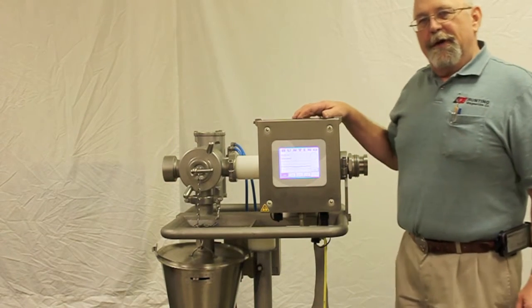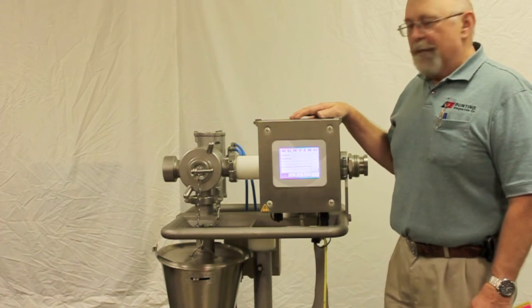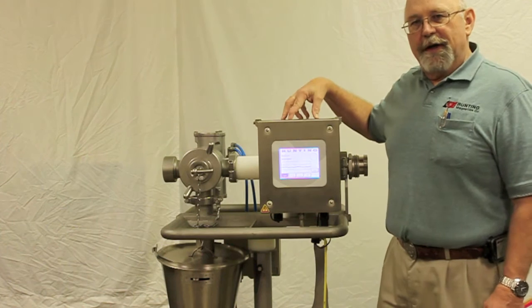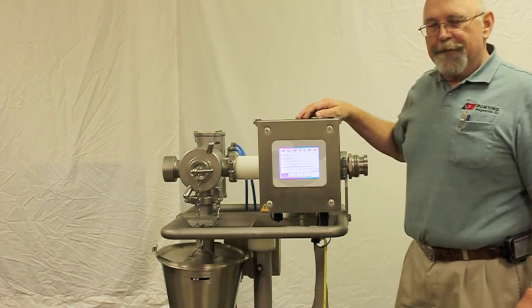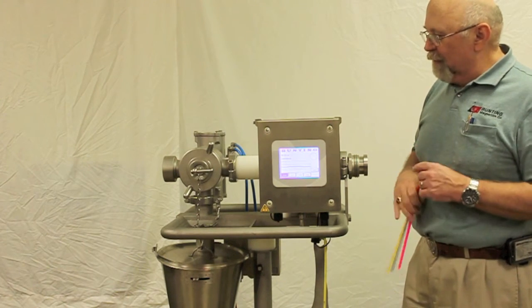Hello and welcome to the Bunting Magnetics Tech Corner. We're going to talk about metal detection today. This particular unit is an AMD05 meat line unit. This one has a touch display with 5.1 electronics.